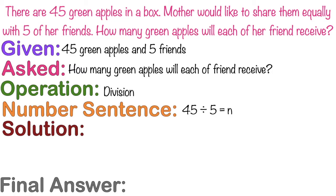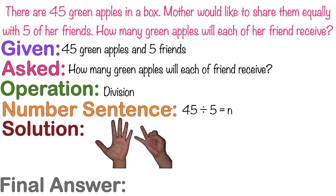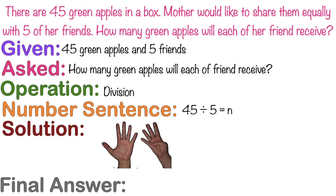Let's have the solution. Any solution will do. Or if you memorize the multiplication table, you can easily find the quotient. But for now, let's use the skip counting method. Let's use your fingers and skip count by 5 until we reach 45: 5, 10, 15, 20, 25, 30, 35, 40, 45. So the final answer is 9 apples.